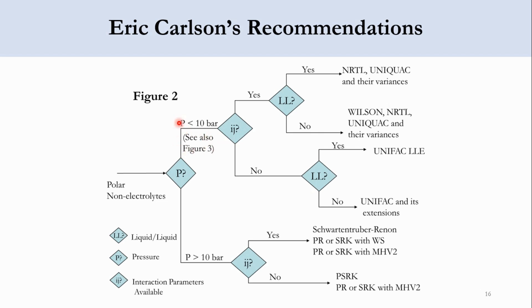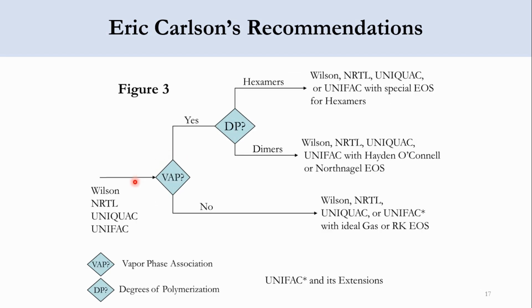There is additional guidance in figure three of Eric Carlson's recommendation. When Wilson, NRTL, UNIQUAC, or UNIFAC activity coefficient models are selected, we check for vapor phase association (VPA). If there is no vapor phase association, we use those models with ideal gas or RKE equation of state. If vapor phase association is present, we check the degree of polymerization — hexamers or dimers — and select the corresponding property packages accordingly. This completes the overall Eric Carlson recommendation for property package selection.